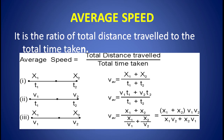Now, if the body covers distance x1 with velocity v1 and distance x2 with velocity v2, then average speed equals x1 plus x2 divided by (x1/v1 plus x2/v2), which simplifies to (x1 plus x2) times v1·v2 divided by (x1·v2 plus x2·v1).